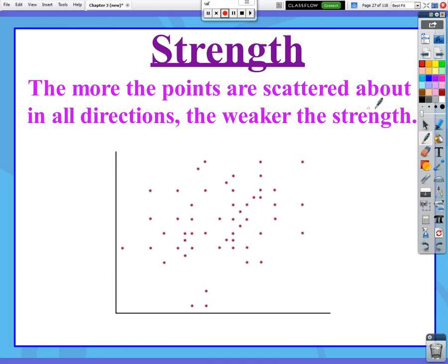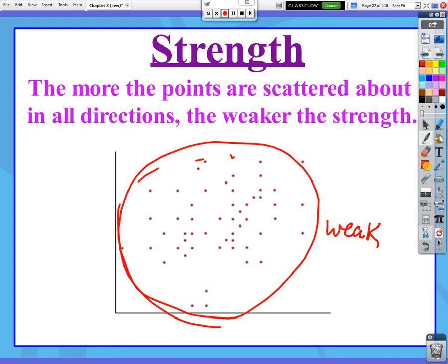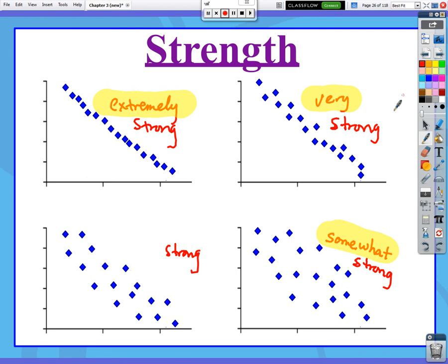Now, the more the points are scattered about in all directions, up, down, left, and right, the weaker the strength. So, if you saw a scatter plot that looked like this, this really doesn't look like it's making a straight line, kind of in any direction. I would call it weak. The more that your points look like they're almost making a circle, is where it's really going to be the ultimate weakest strength of all. The dividing line between strong and weak is just about at this point here. To me, this almost kind of looks like a football. And if you see something that looks like a football, that's where I would still kind of call it somewhat strong. But it's just about getting to be weak.